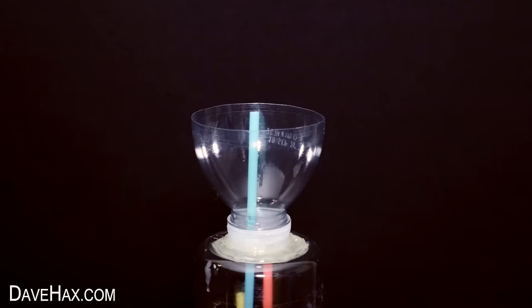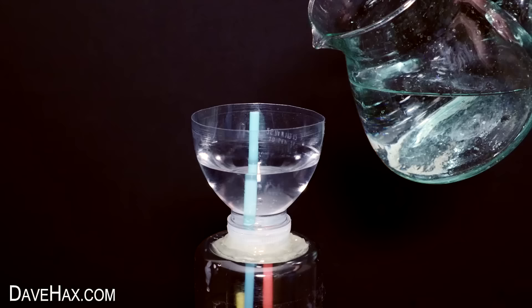To use it, we first need to prime it, which we do by pouring water in the top, which runs down the red straw and fills up the bottom bottle.